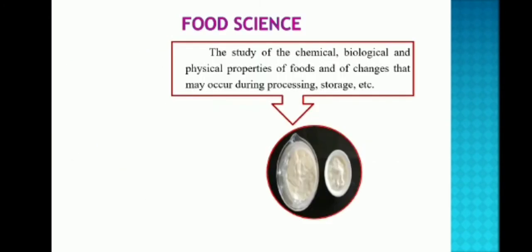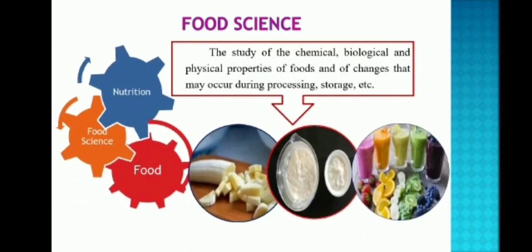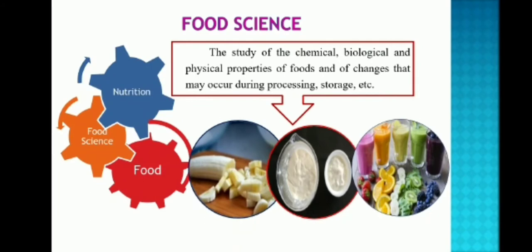Definition of food science: Food science is the study of the chemical, biological and physical properties of foods and of changes that may occur during processing and storage.